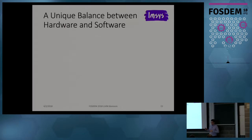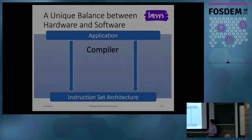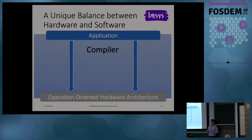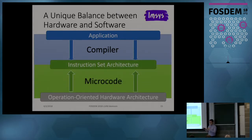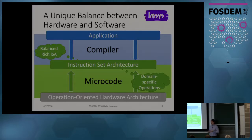Having a microcode-defined instruction set architecture means that typically you have application code and a compiler turning it into assembly and binary executable — and that's hardwired into the processor. But with an operation-oriented hardware architecture, microcode lets us lift the instruction set architecture from the hardware to a higher abstraction level. This gives us the ability to implement domain-specific operations like FFT and encryption, and it also provides us with a rich and balanced ISA which the compiler can target.